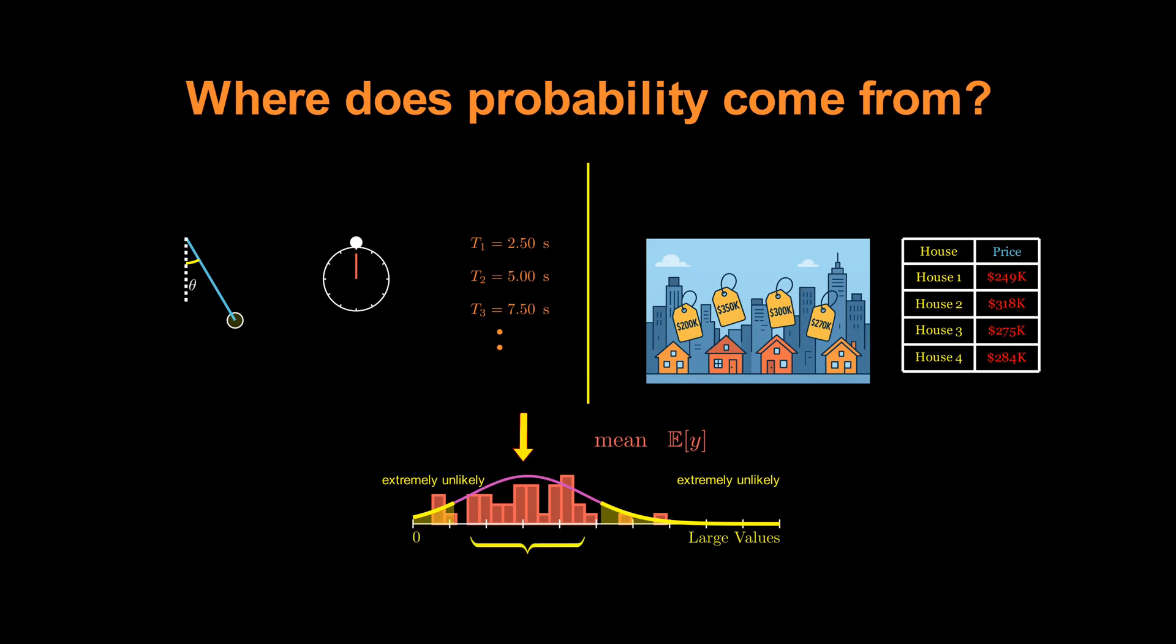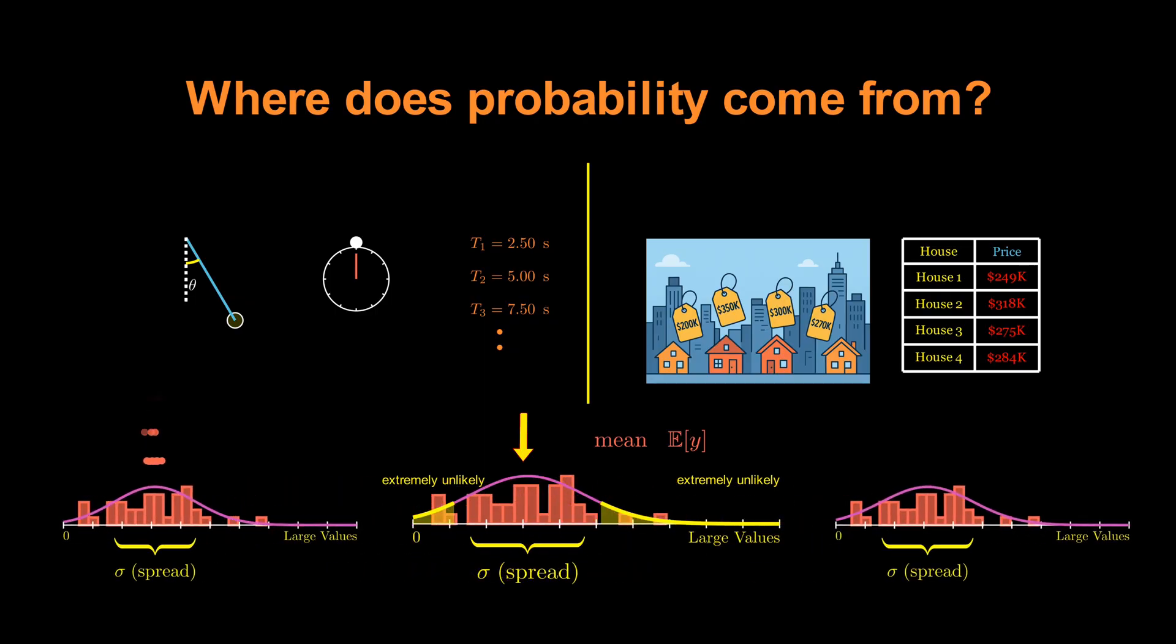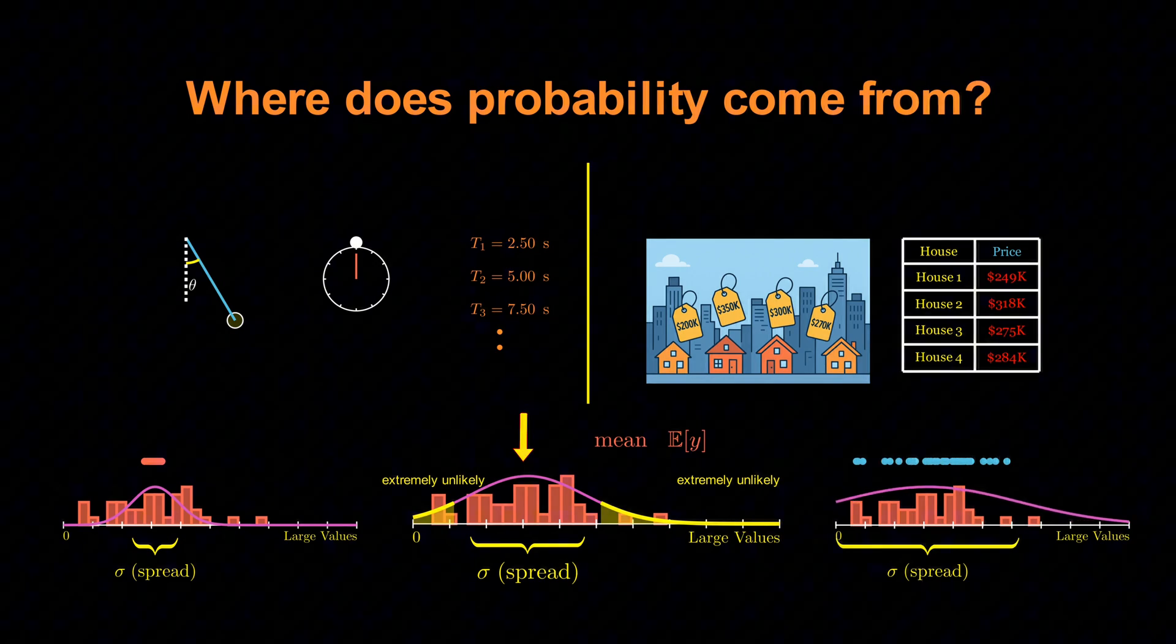The width of that distribution, the standard deviation, tells us how much our measurements fluctuate. If it's narrow, our next measurement will be close to the last. If it's wide, we might get something very different.